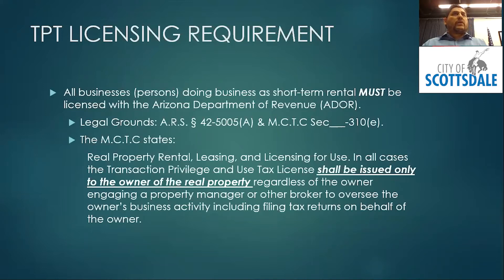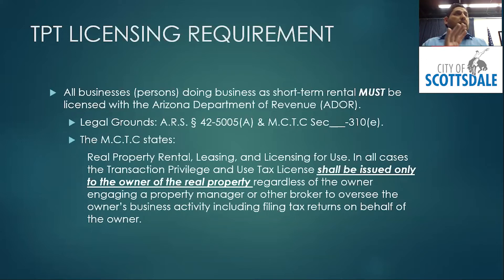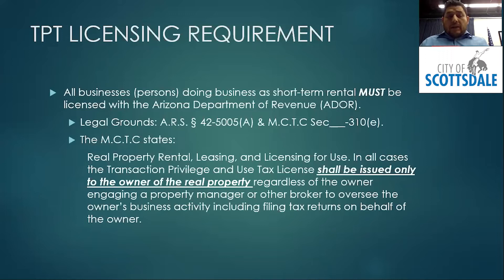Sometimes property managers report everything under their own license, or give you their license plus three numbers for your location. If you have an 11-digit number they told you is your license number, that's not correct. TPT licenses are only eight digits, and usually begin with 07, 20, or 21. It's very important that you are licensed under your own name, as specified in city code section 310e.